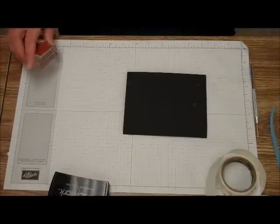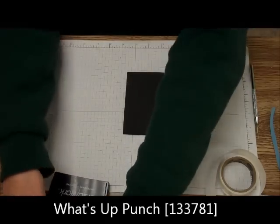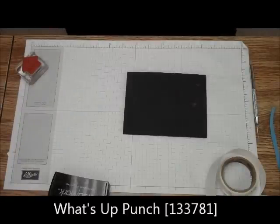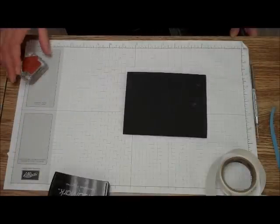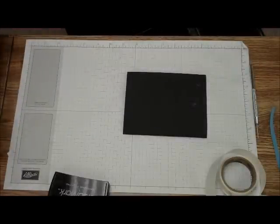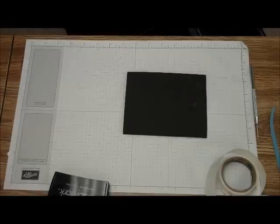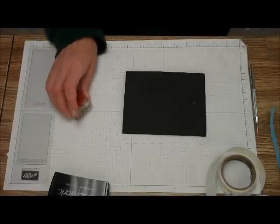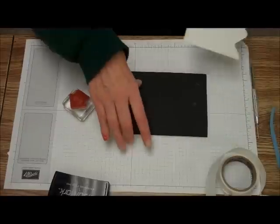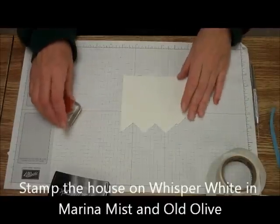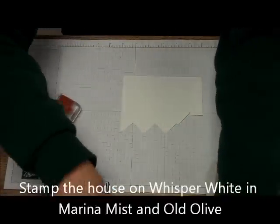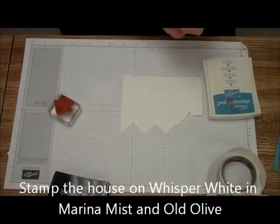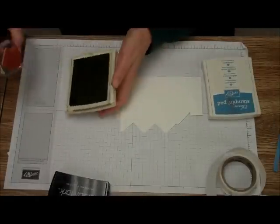Also you can use the What's Up Punch, but I know this is hard to believe, I don't have that Punch. But it perfectly cuts out this. So, the first thing we're going to do is we're going to stamp in Marina Mist and Old Olive the Little House.